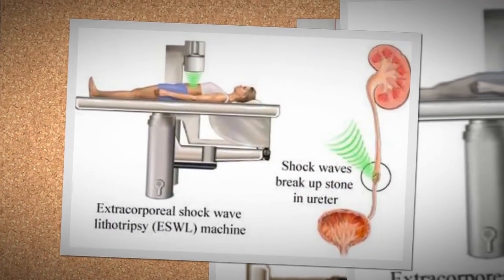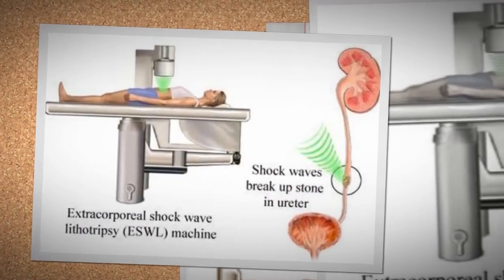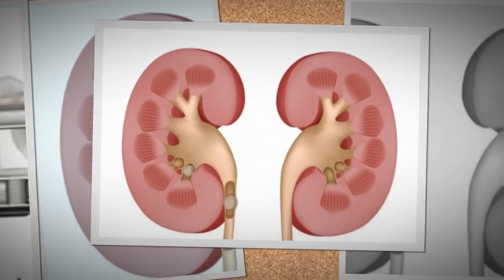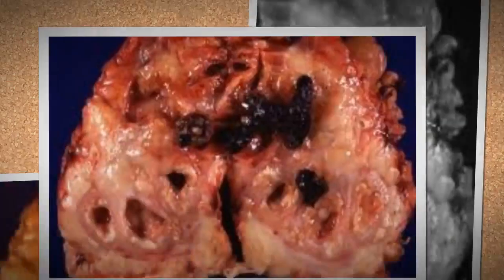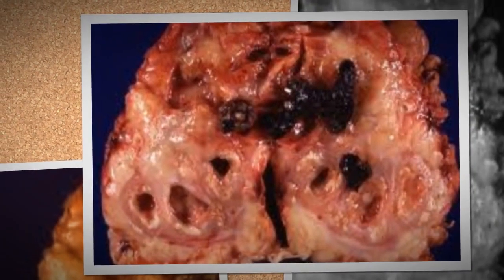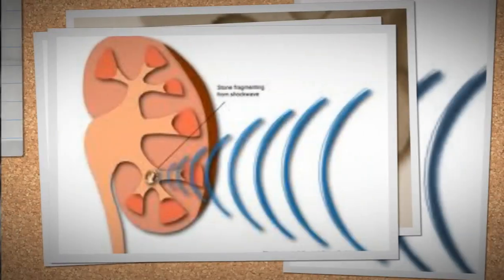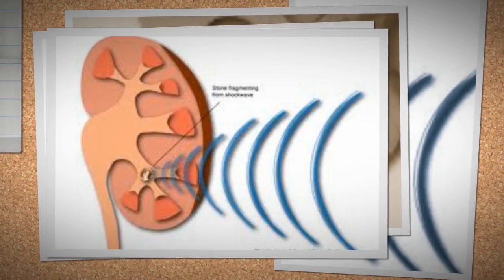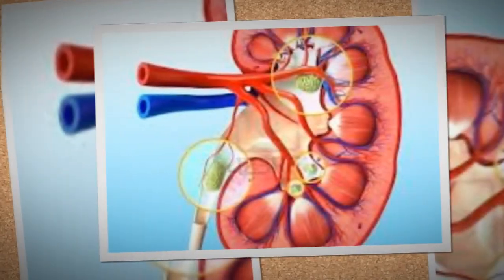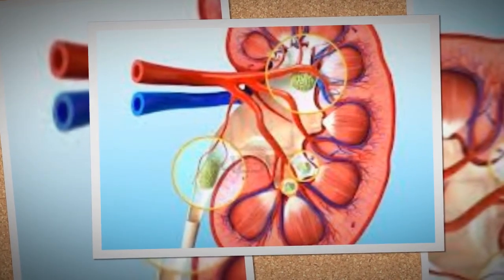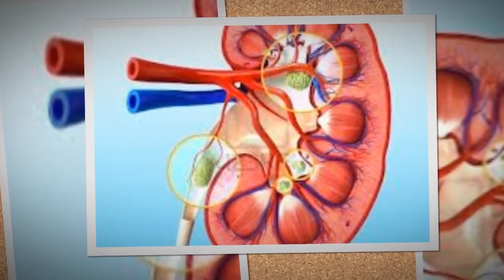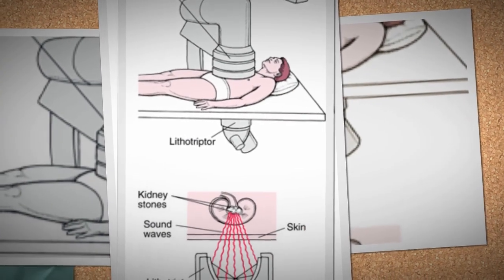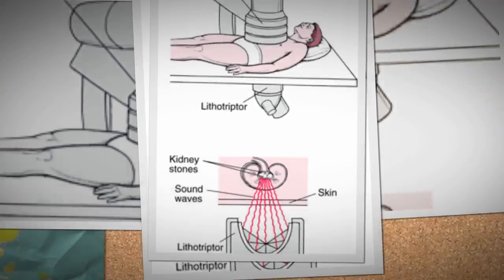There are two types of shock wave machines: with one machine the patient sits in a tub of water, with the other the patient lies on a table. A ureteroscope — a long wire with a camera attached — is inserted into the patient's urethra and passed up through the bladder to the ureter where the stone is located.